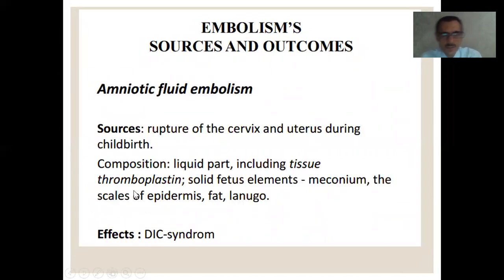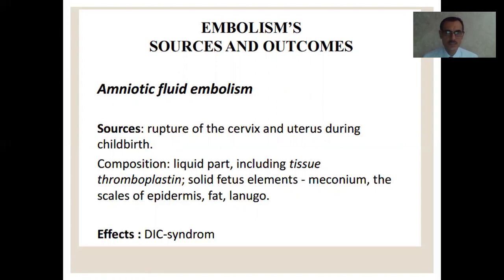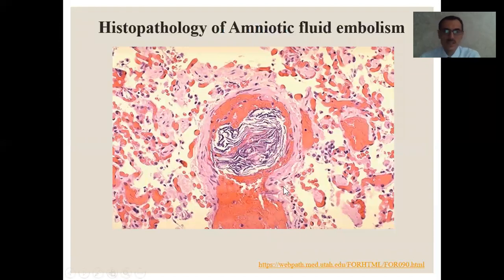The amniotic fluid embolism: source is the rupture of the cervix and uterus during childbirth. It is composed of acute components including tissue thromboplastin, solid fetal elements, meconium, scales of epidermis, fat, and lanugo. It leads to disseminated intravascular coagulation syndrome. Here are histological pictures during amniotic fluid embolism — you see the scales from the epidermis and fetal elements in the maternal blood vessels.